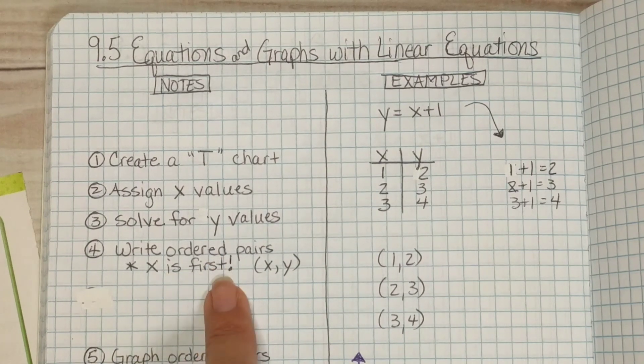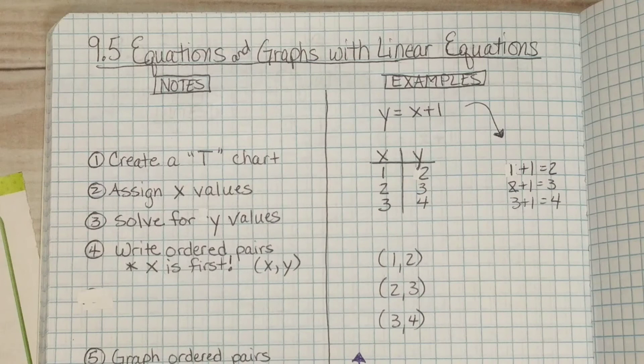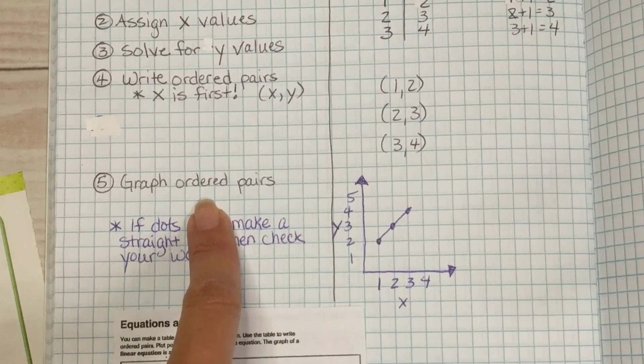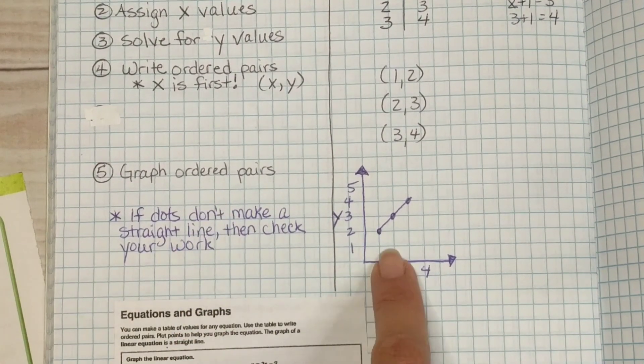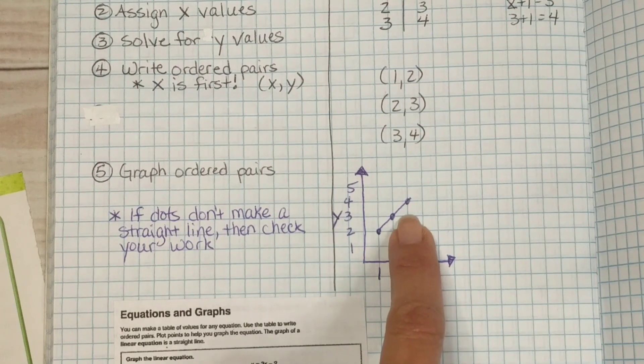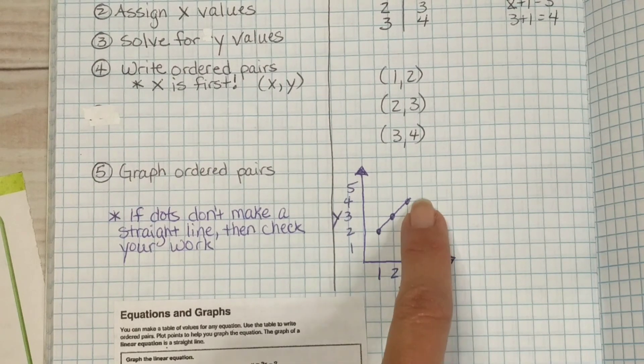Then we write the ordered pairs. x is always first. x is always first now we graph the ordered pairs. There's 1, 2, 2, 3 and 3, 4.